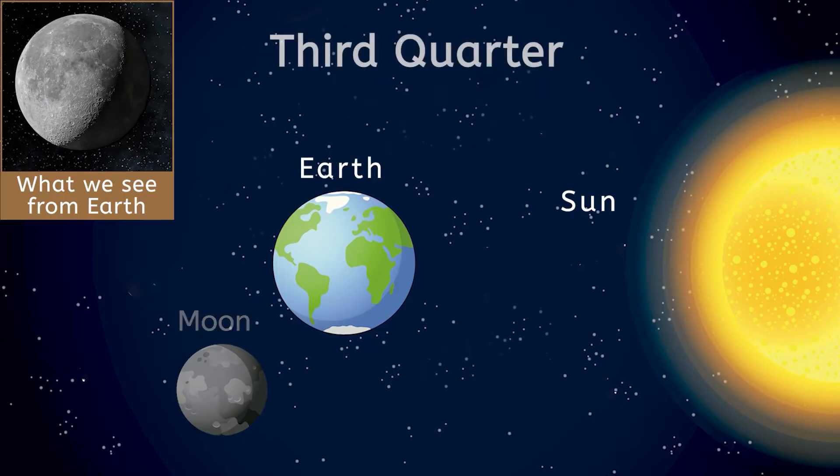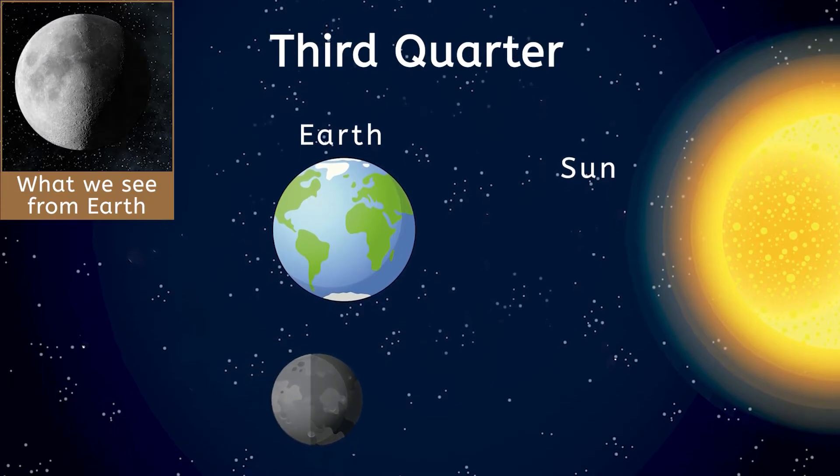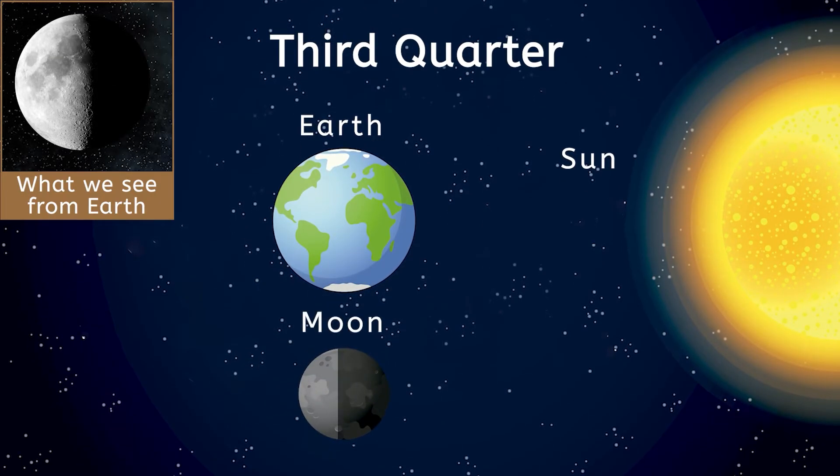In the third quarter phase, also known as the last quarter, the moon is three quarters of the way through its orbit. We see the left half of the moon illuminated. It's like the first quarter, but flipped. This time, the moon, Earth, and Sun form a different right angle, lighting up the opposite half of the moon.